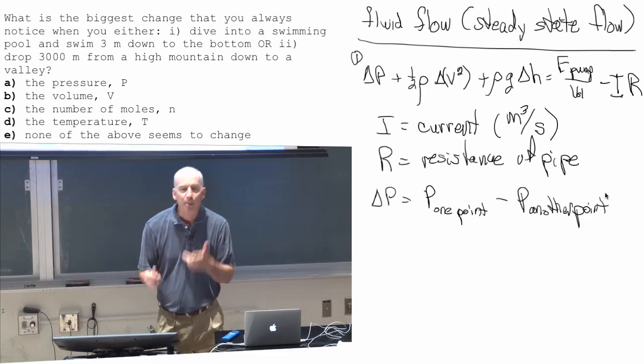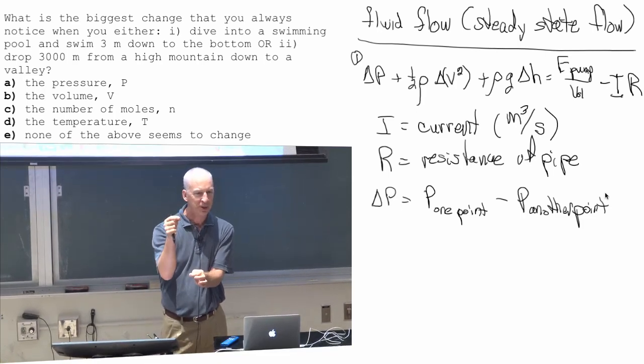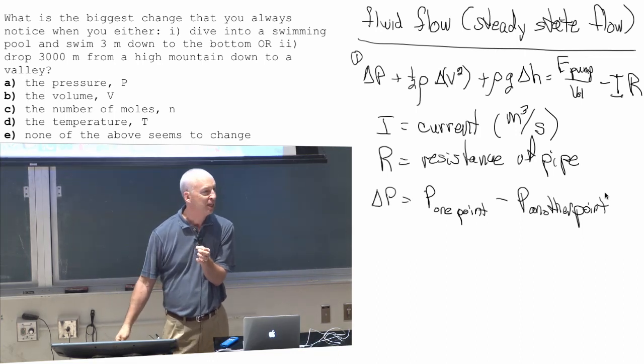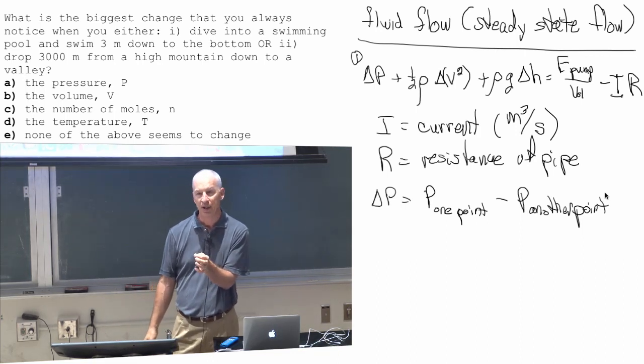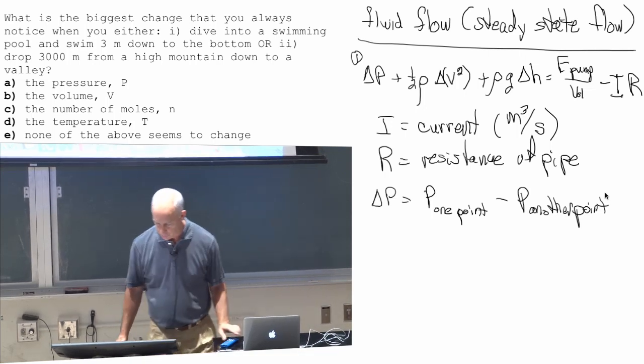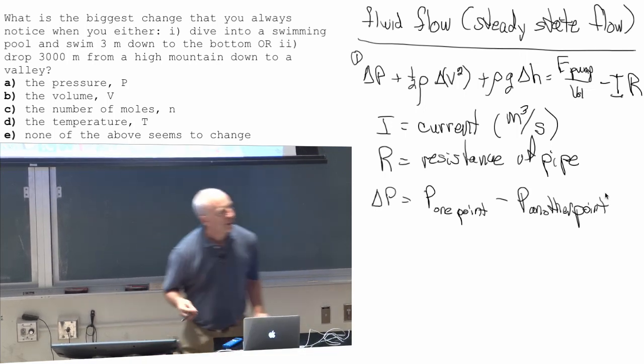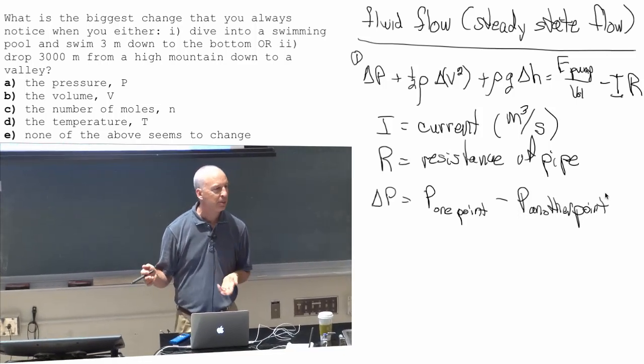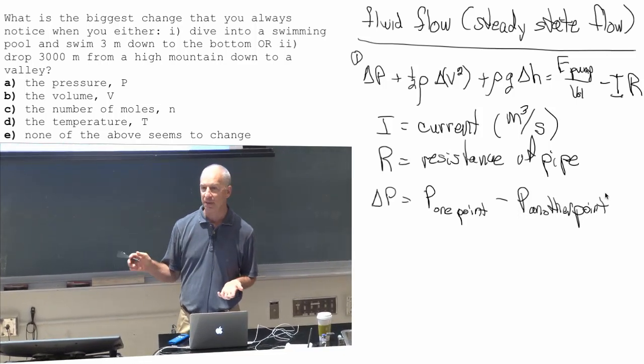Is there a pump in between the top of the pool and the bottom of the pool? No. So you can throw the pump issue away. There's nothing putting in energy between those two points. Current is when something's flowing, so the current is equal to zero for the swimming pool because nothing's flowing.